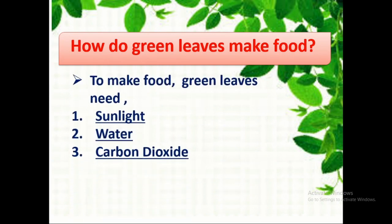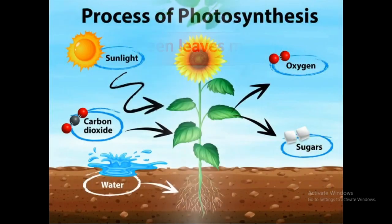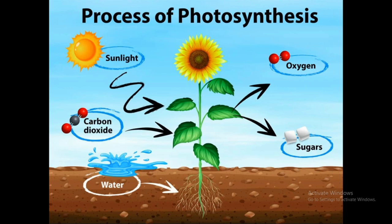How do green leaves make food? Green leaves need three things: sunlight, water, and carbon dioxide. Roots absorb water and minerals from the soil and send them to the leaves through the stem. Leaves take in carbon dioxide through stomata and absorb sunlight with the help of chlorophyll. They use sunlight to put water and carbon dioxide together to make food. This plant food is a kind of simple sugar called glucose.